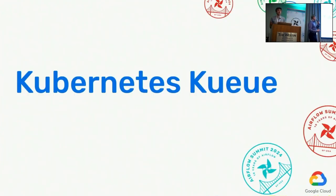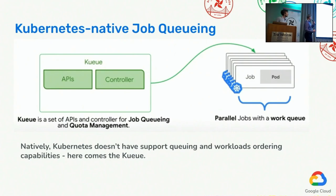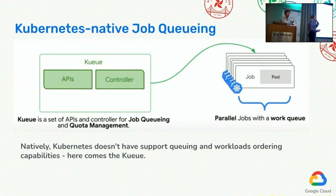Let's get into Kueue. So in general, why do we need Kueue at all? Natively, Kubernetes doesn't have the capability of queuing jobs or workloads, as well as it doesn't have the capability of executing them in a specific order. That's why Kueue functionality was first designed, created, and implemented.